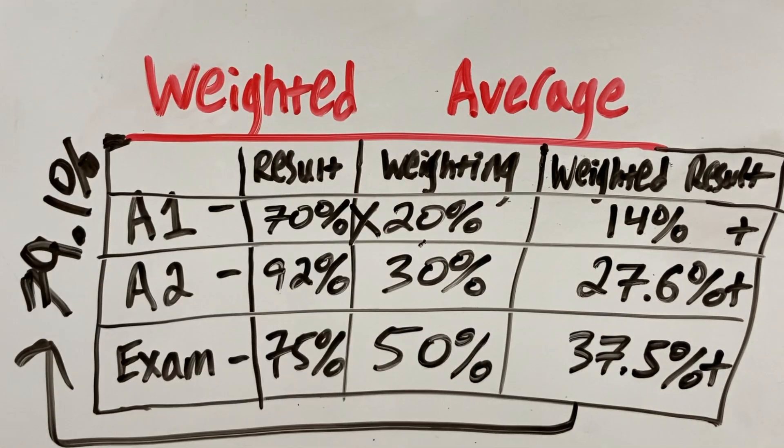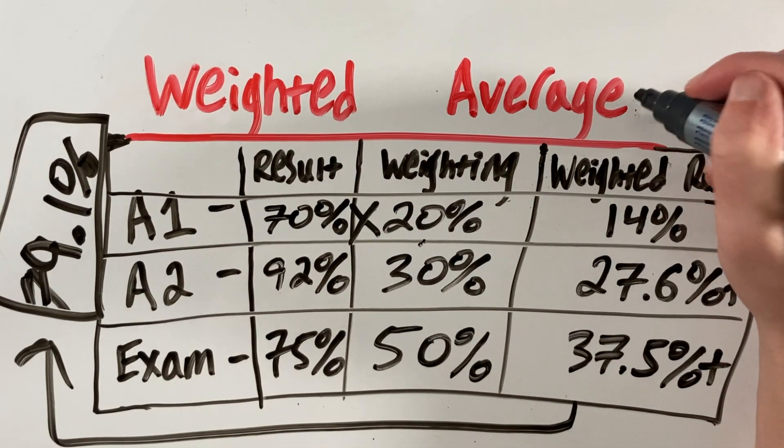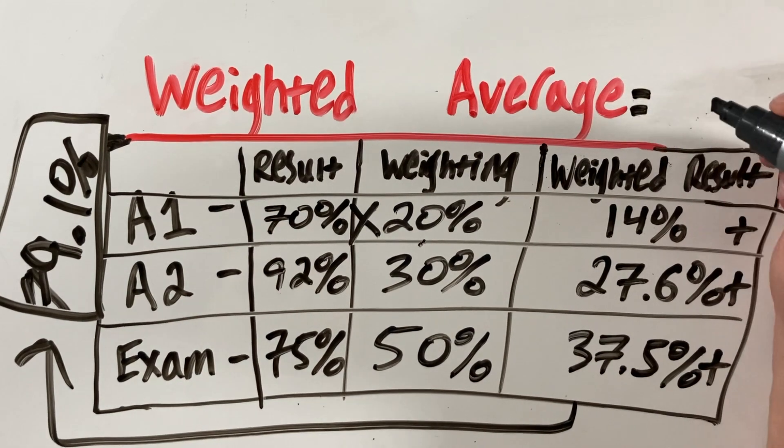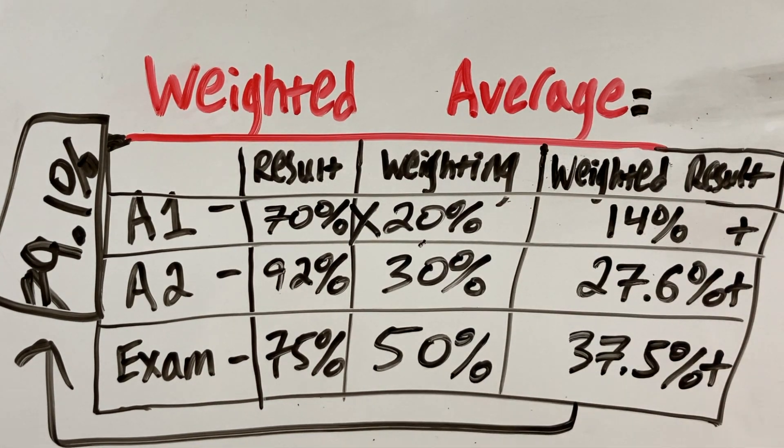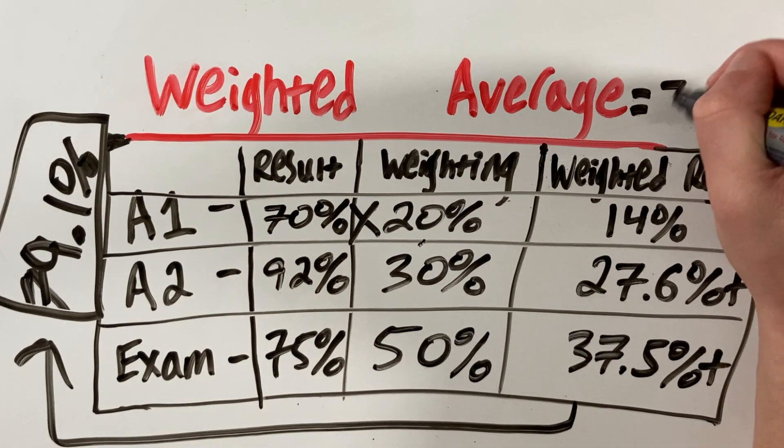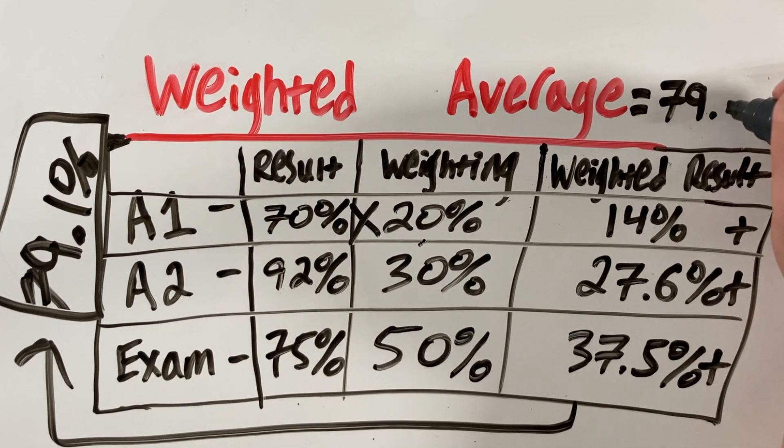And again, that's a percentage, meaning that our weighted average is equal to these three summed—in other words, 79.1%.